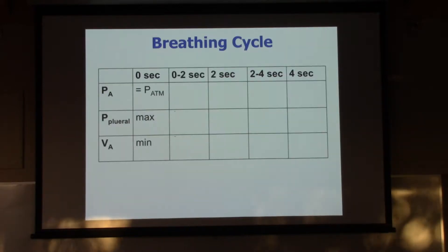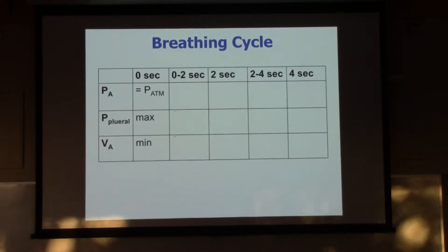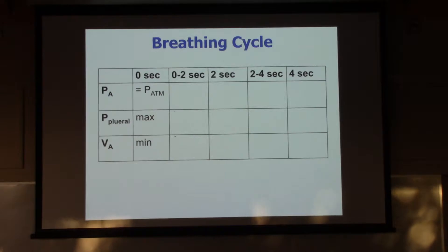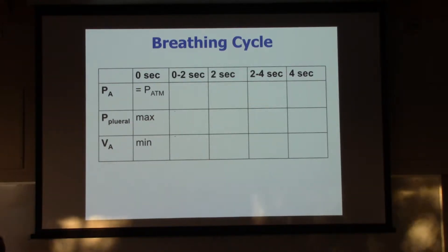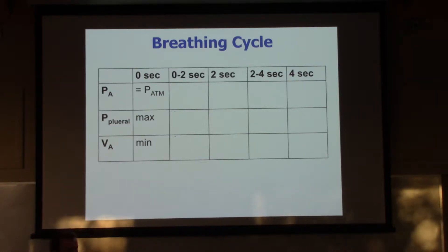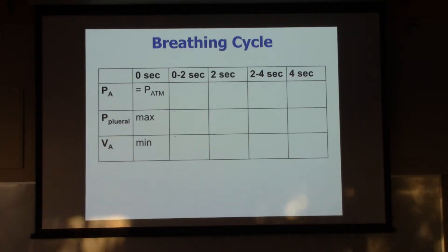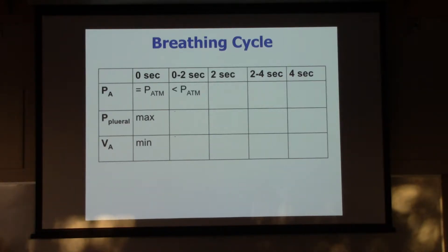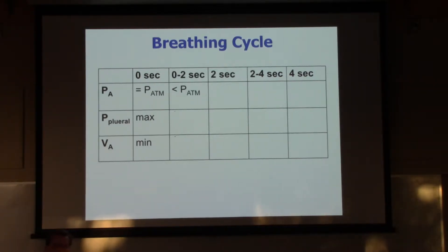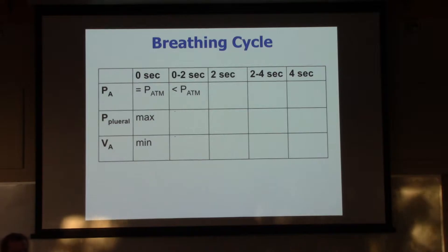From zero to two seconds, this is the inhaling part of the cycle. We're going to start to inhale now. So if air is flowing into our lungs, what must be true about the pressure in the alveoli? It's going to go down, right? We need less pressure in the alveoli than in the atmosphere so that air will flow into the lungs.